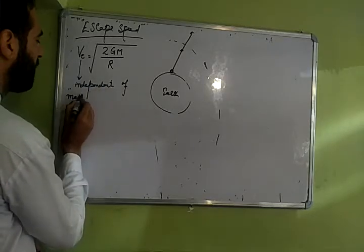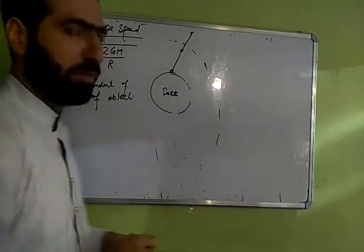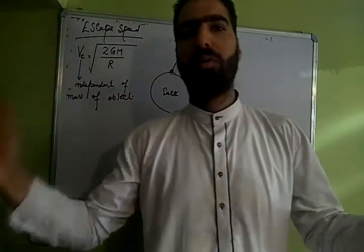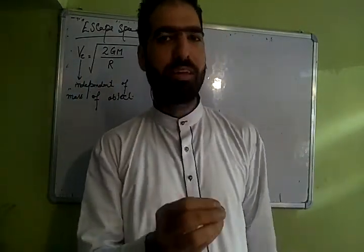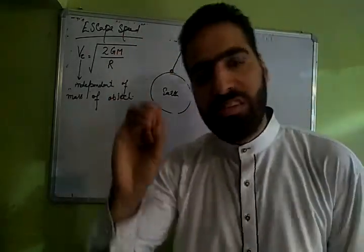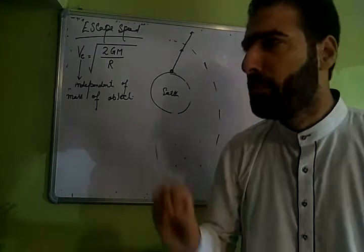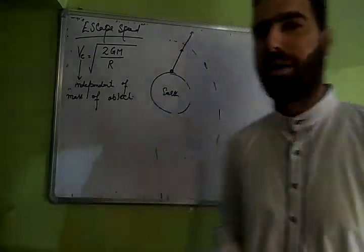Object ke mass pe beta depend nahi karta hai. Chahe aap bada sa object le lo, chhota sa object, donu ko earth surface ke nazdik agar aapne donu ko throw kiya to aapko donu ko same speed impart karni hai, minimum speed requirement same hai, taaki woh donu field ko escape kar sakhe.